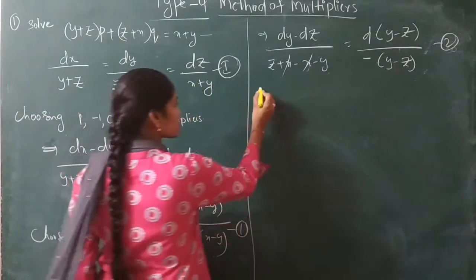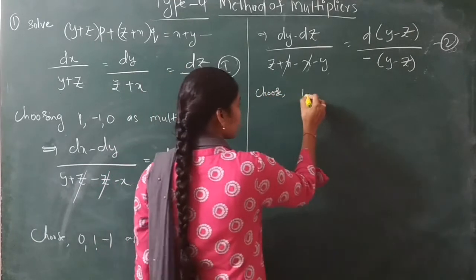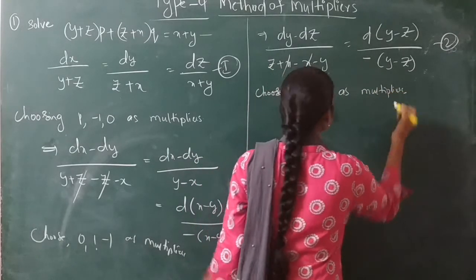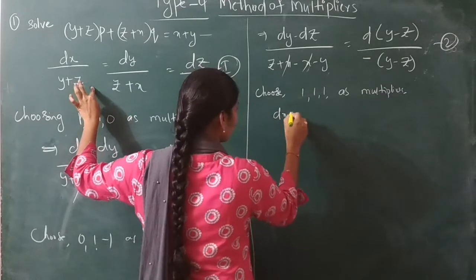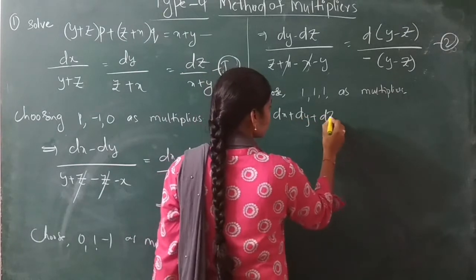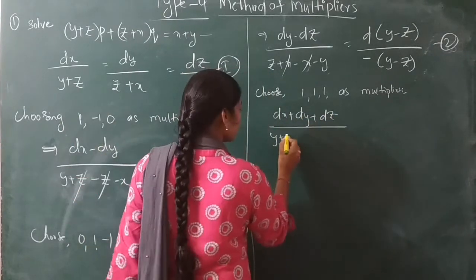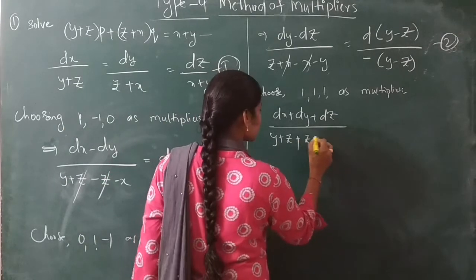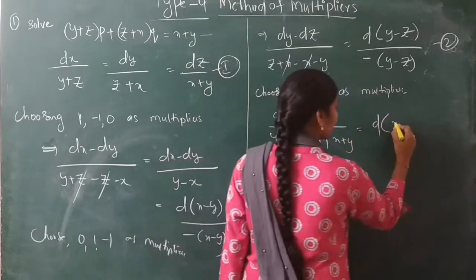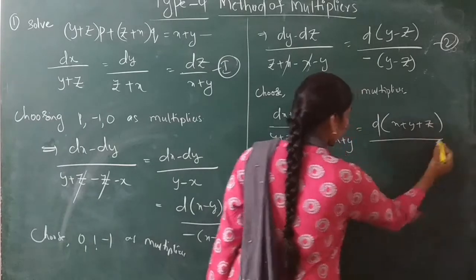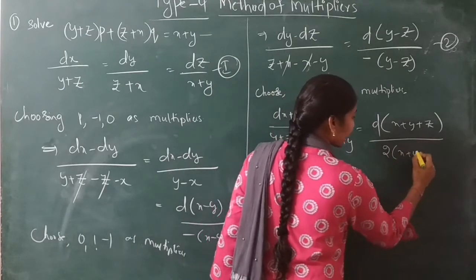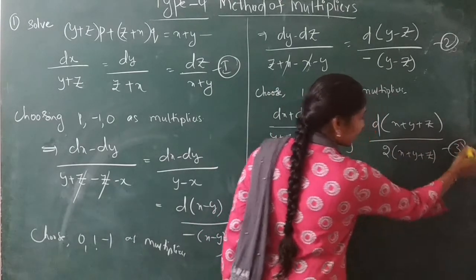Now choose multipliers 1, 1, 1. The numerator becomes dx + dy + dz = d(x+y+z), and the denominator is (y+z) + (z+x) + (x+y) = 2x + 2y + 2z = 2(x+y+z). So this gives d(x+y+z) over 2(x+y+z). Let this be equation 3.